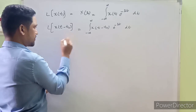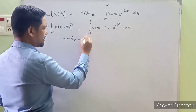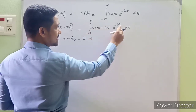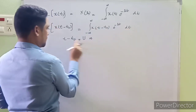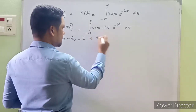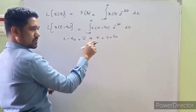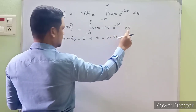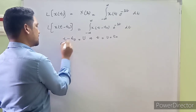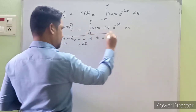We substitute: let u = T - t₀. From this, T = u + t₀, and differentiating both sides (since t₀ is a constant), we get dT = du. These are the two important values we need from this substitution.